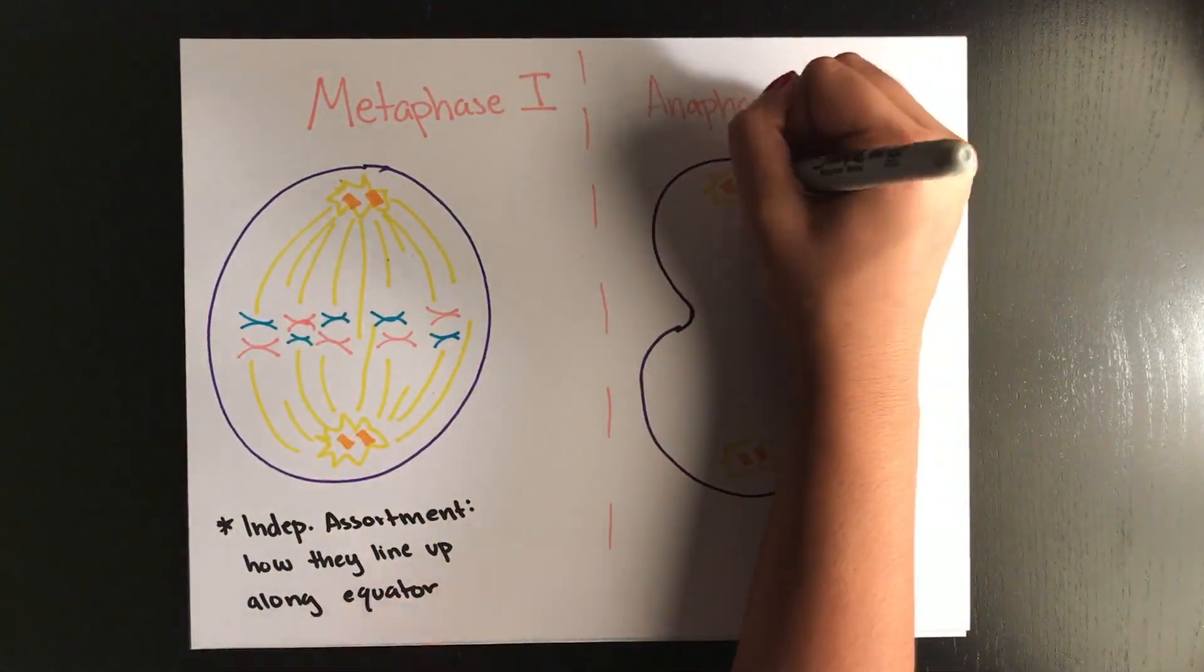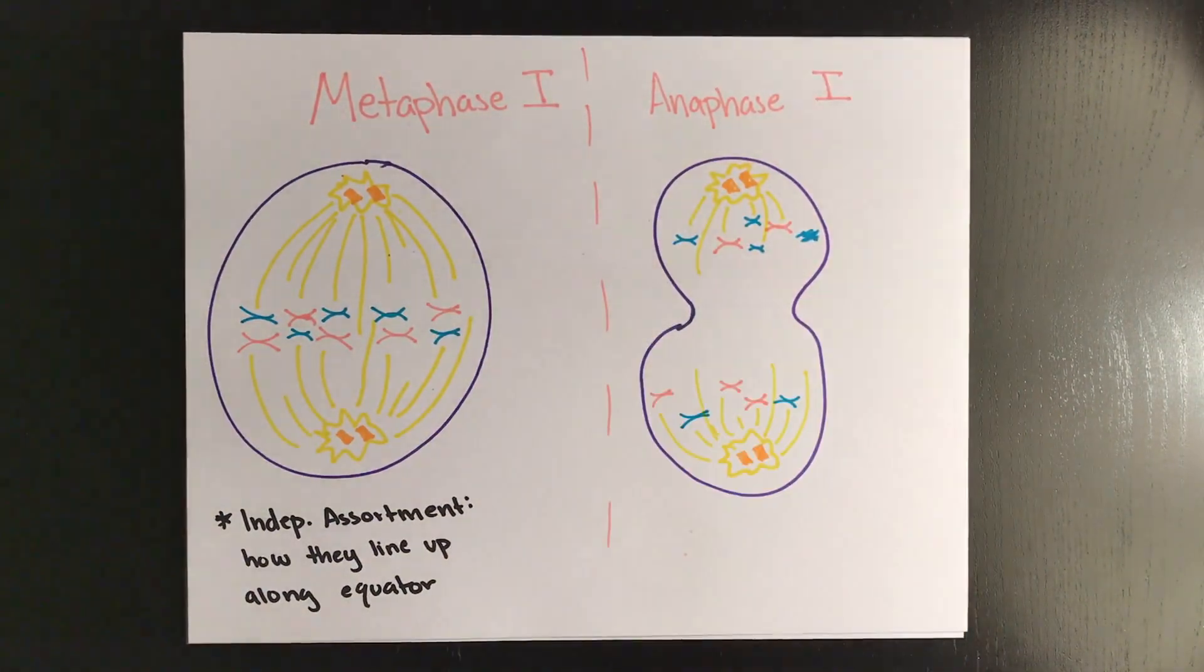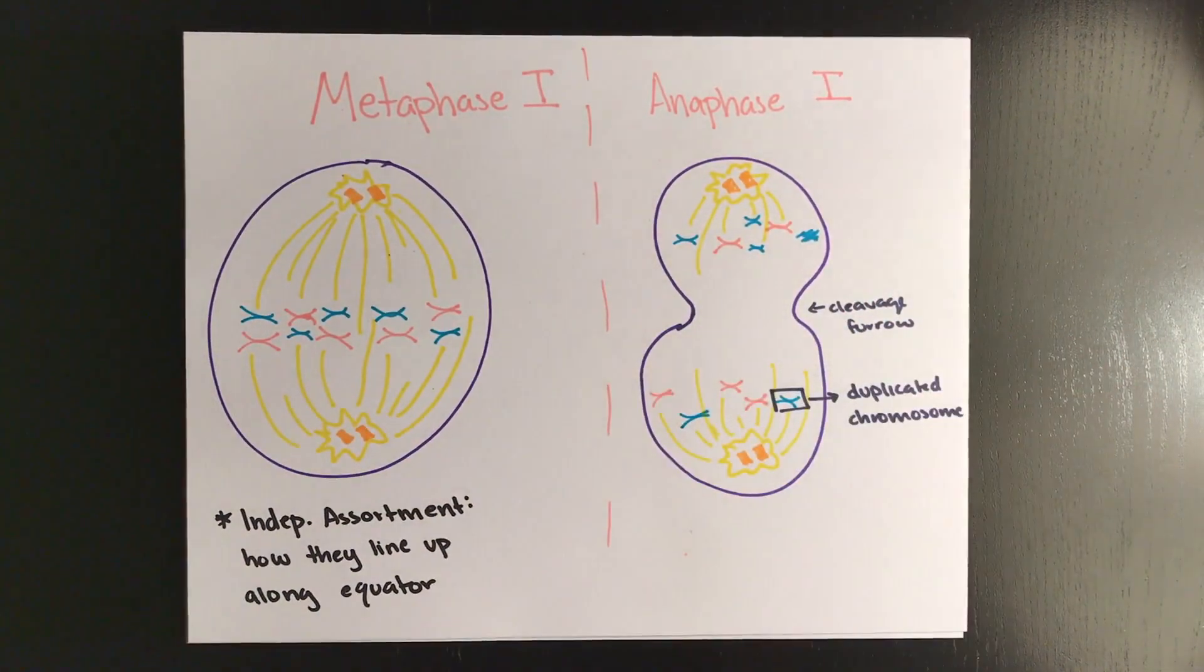During anaphase 1, your centromeres don't divide, but the homologous pairs separate. So again, different from mitosis, you have two sister chromatids in each cell.